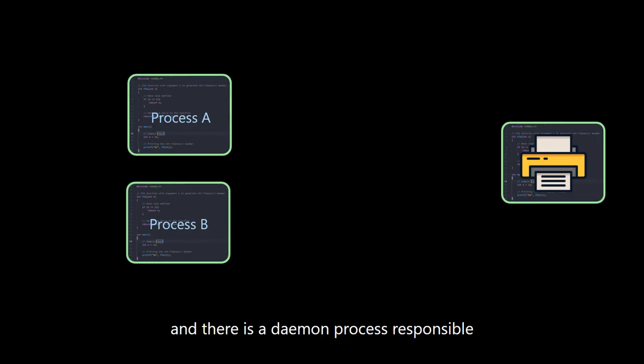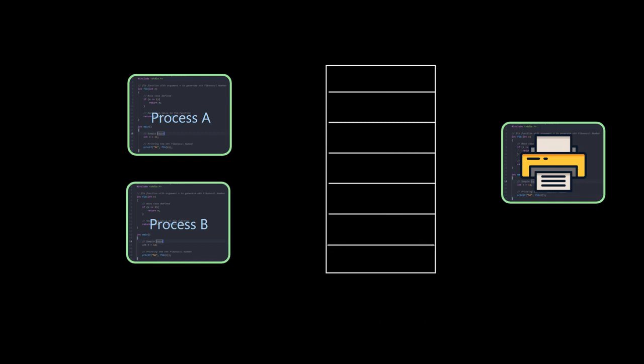In memory, there are two processes and there is a daemon process responsible for printing. If you want to print, there will be a shared print directory waiting to be printed. Each row has a corresponding number.